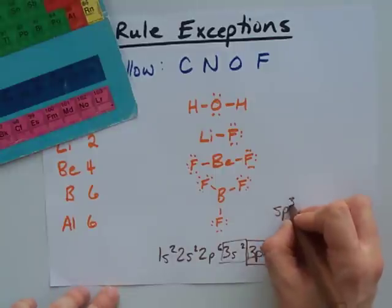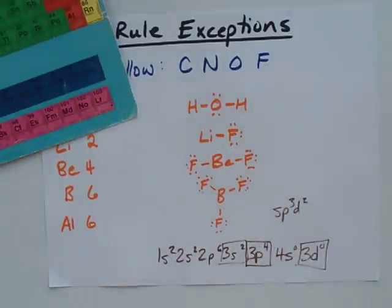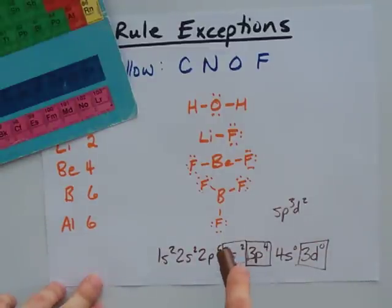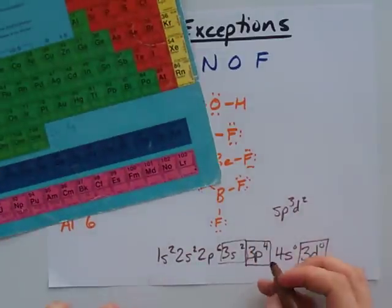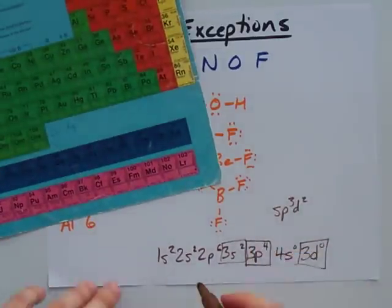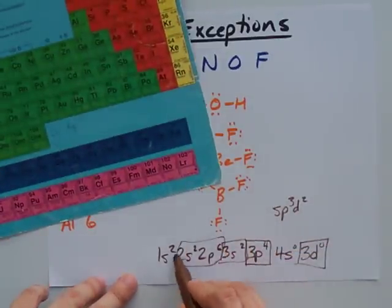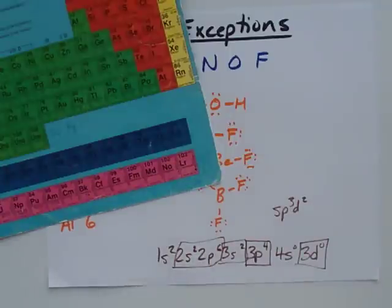It's called sp3d2 hybridization, and what it really means is that instead of there being 8 electrons in the outer shell... oh, right.